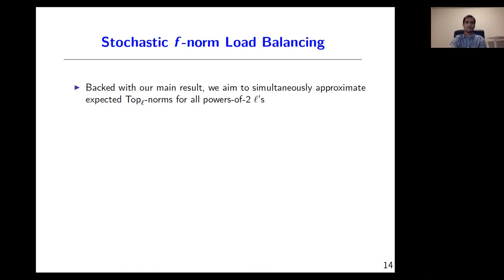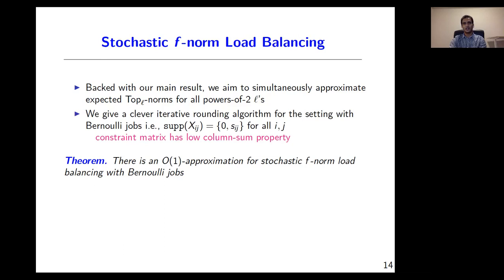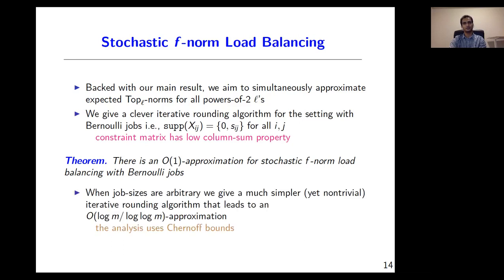For our main result, we aim to simultaneously approximate top-L norms for all L's that are powers of 2. We give a clever iterative rounding algorithm for the setting with Bernoulli jobs, where every x_ij takes at most two sizes and one of them is 0. This leads to an order-1 approximation for stochastic f-norm load balancing with Bernoulli jobs. On the other hand, when job sizes are arbitrary, we give a much simpler iterative rounding algorithm that leads to an order log m over log log m approximation. As suggested by the approximation factor, the analysis uses Chernoff bounds.